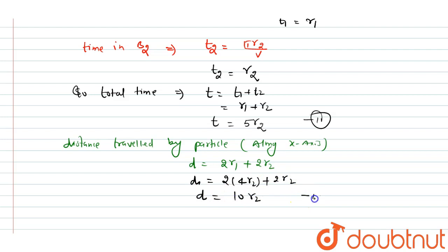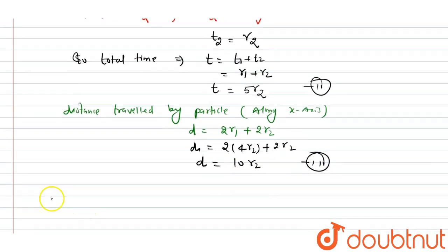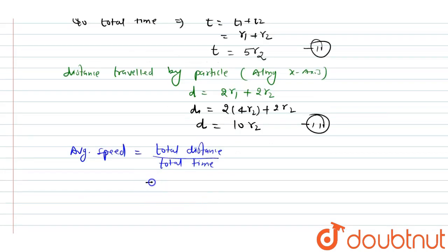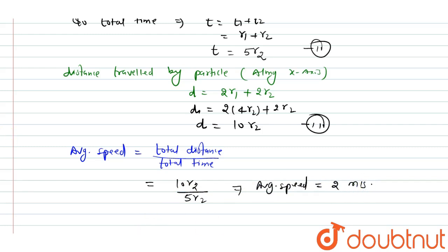Average speed = total distance / total time = 10r2 / 5r2 = 2 m/s. So the average speed of the charged particle along the x-axis in time interval T is 2 m/s.